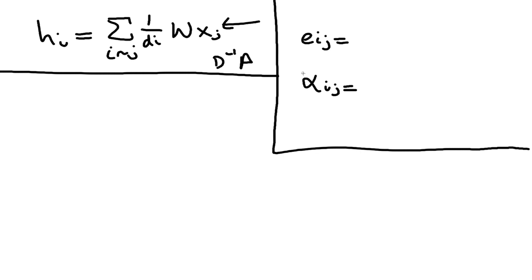This d inverse a graph convolutional network type of model is a special case of a graph attention network where all the attention coefficients are uniform.